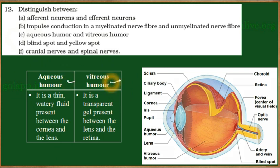Next, aqueous humor and vitreous humor — both are found in the eye. The ciliary body and ligaments hold the lens, and the lens separates the eyeball into two parts. The anterior part is filled with aqueous humor, a thin watery fluid present between the cornea and the lens. The posterior part, between the lens and the retina, is filled with vitreous humor, which is thicker and jelly-like.